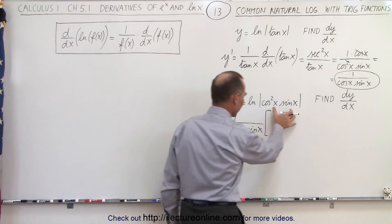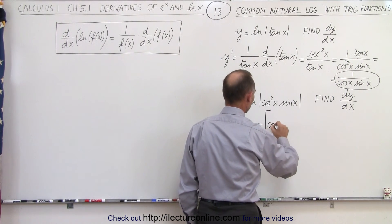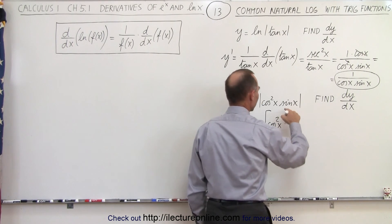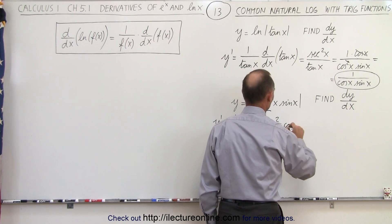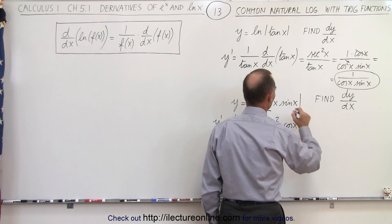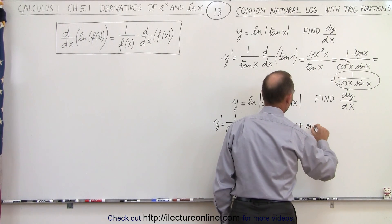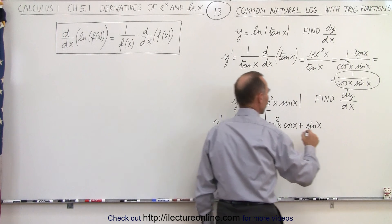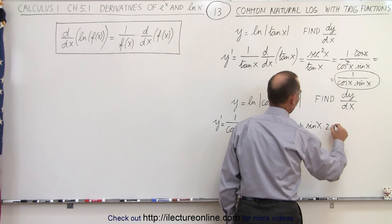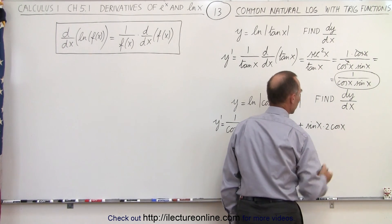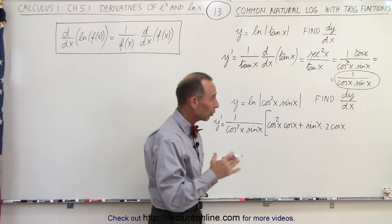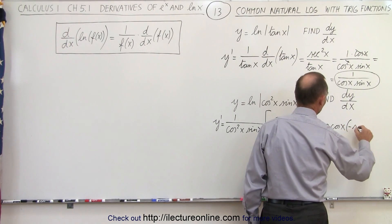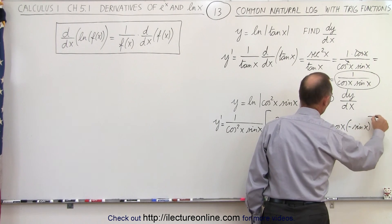Here we have a product, so we take the first — cosine squared of x — times the derivative of the second. The derivative of sine is cosine of x. Plus the second — sine of x — times the derivative of the first. Using the chain rule, that would be 2 times cosine of x to the first power, times the derivative of cosine of x, which is minus sine of x.